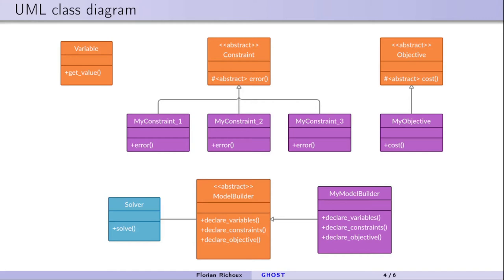Here is the UML class diagram of GHOST. In orange, you have the classes that concern everything needed to declare a model of a problem. In blue, it's GHOST's classes to solve the problem. In purple are all the classes the user needs to write to declare their problem. You need three things to declare a combinatorial optimization problem: variables, domains (the set of values your variables can take), and constraints. If it's an optimization problem, you also need an objective function — not necessary for a decision problem, but required if you're maximizing or minimizing a value.